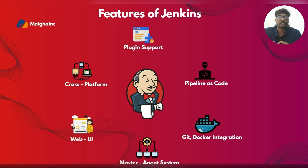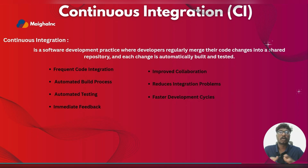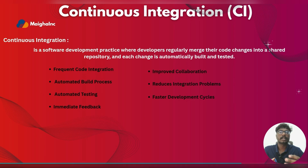Now let's see how continuous integration works and how Jenkins brings it to life. Continuous integration means developers add their code into a shared place regularly. Every time new code is added, it's automatically built and tested without any manual steps. This helps teams find issues easily, work faster, and deliver better software more smoothly.